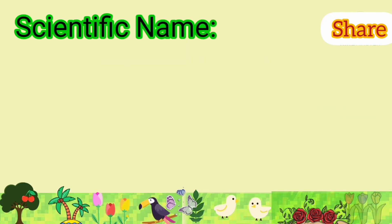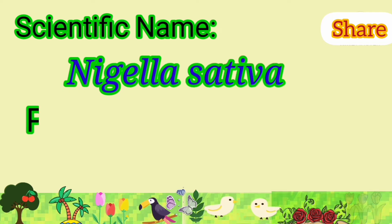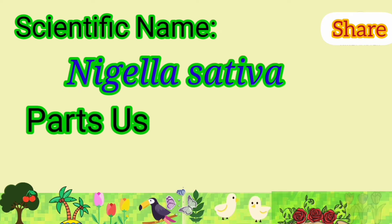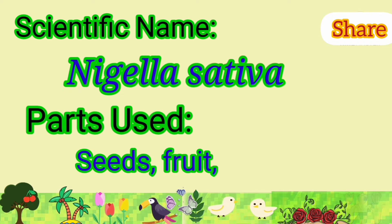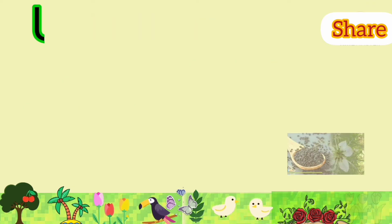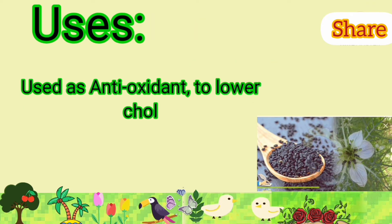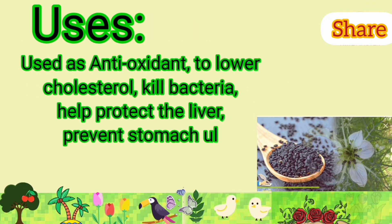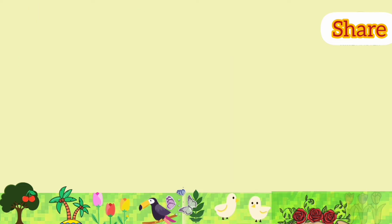Kalonji: its scientific name is Nigella sativa. Parts used are seeds and fruit. It is used as an antioxidant, lowers cholesterol, and kills bacteria.